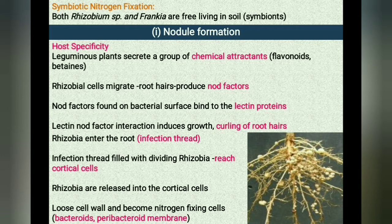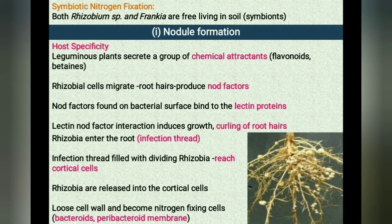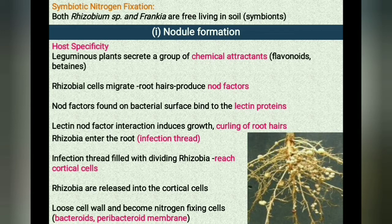In response to these chemical attractants, specific rhizobial cells migrate towards the root hair and produce the nod factor, that is the nodulation factor. The nod factor found on the bacterial surface binds to lectin proteins present on the surface of root hairs. This lectin-nod factor interaction induces growth and curling of the root hairs around the rhizobia. At these regions, the cell wall degrades in response to nod factor and rhizobia enter the root hair through an invagination of the plasma membrane called the infection thread.